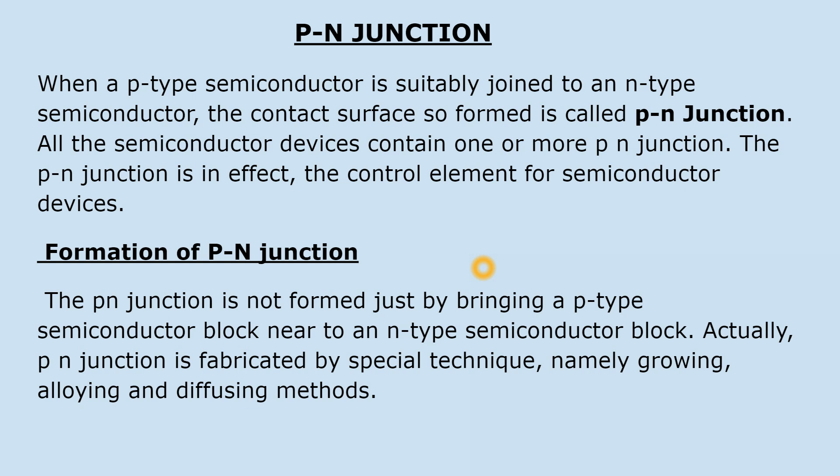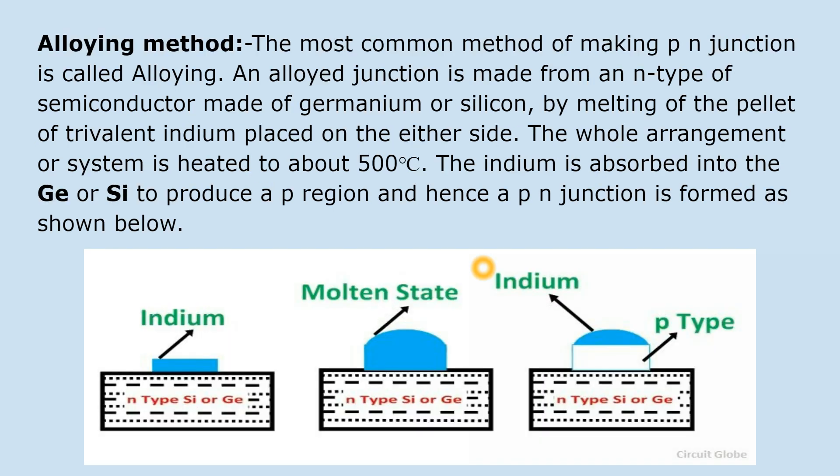These special techniques may be the growing technique, it may be alloying, or it may be the diffusion technique. Alloying method से P-N junction कैसे बनाया जाता है, we will discuss in brief. The most common method of making a P-N junction is called alloying.